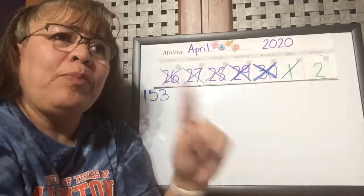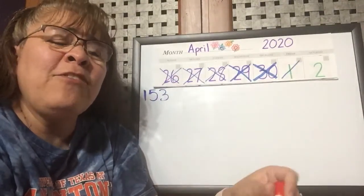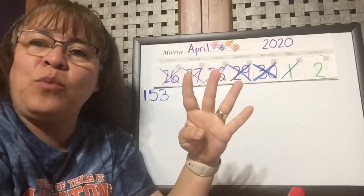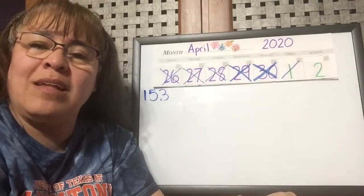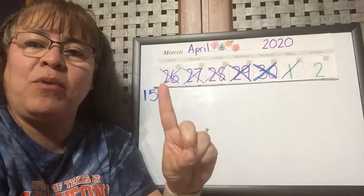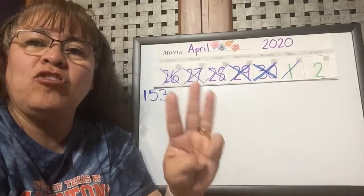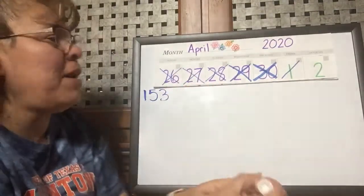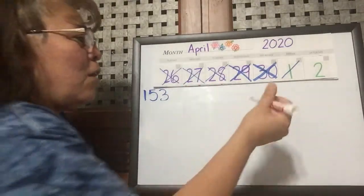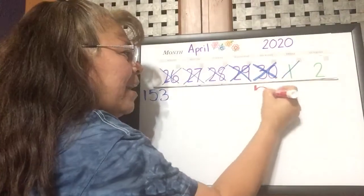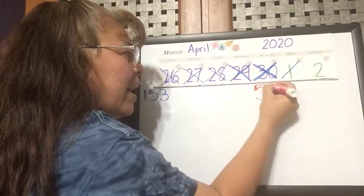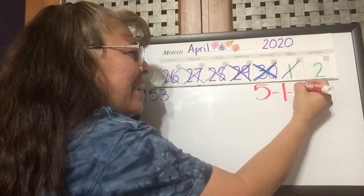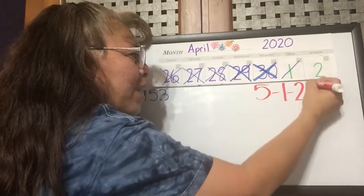Let's see. If April was the fourth month, what do you think May will be? January, February, March, April, May — the fifth month. So we will write a five, and it's the first day, and 2020.